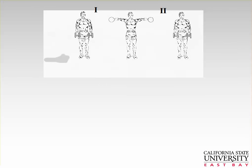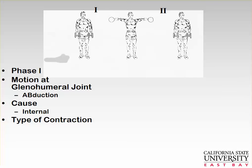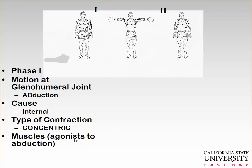How do we assess this? Here we have a lateral raise. From position 1 to position 2, we go through abduction at the glenohumeral joint. The cause of this motion is internal — opposing gravity — which means it is always a concentric contraction. The muscles used are the agonists to abduction: the deltoids and supraspinatus.